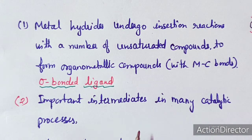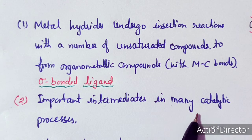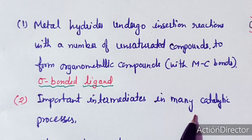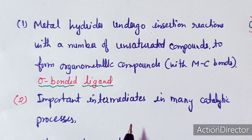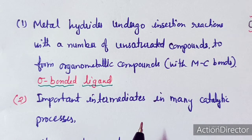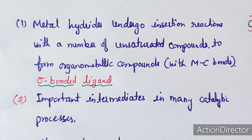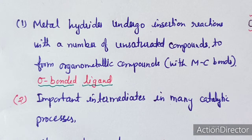Metal hydrides are important intermediates in catalytic processes. In catalytic hydrogenation, during homolytic, heterolytic, or oxidative addition activation of a hydrogen molecule, some monohydrides or dihydrides are formed during the catalytic cycle. So dihydride or monohydride complexes can be formed first, and then only the catalytic cycle takes place.